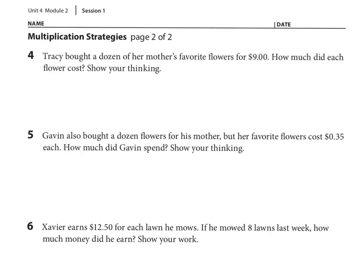Number 4 says, Tracy bought a dozen of her mother's favorite flowers for $9.00. How much did each flower cost? Show your thinking. So I know she bought a dozen of her mother's favorite flowers for $9.00. So 12 cost $9.00. Because I know in a dozen, there's 12. How much did each flower cost?